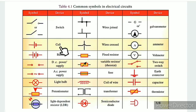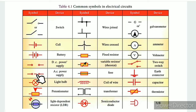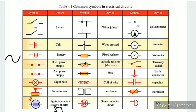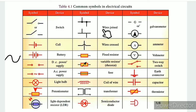The battery symbol uses 5 or 6 lines. We will see the power supply — the DC power supply uses a dot and a gap. The AC power supply represents alternating current. The light bulb is shown as a circle. The potential meter and the light-dependent resistor (LDR) are also shown.